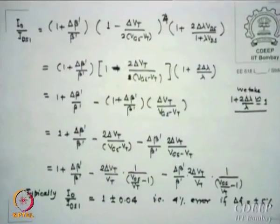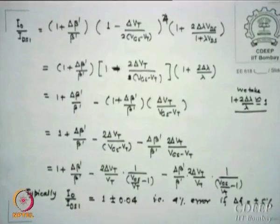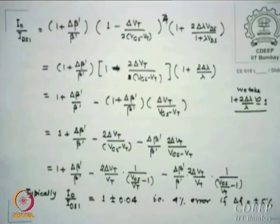4% error is normally acceptable in most cases, but if you require lower than that, you must try to minimize it. If any parameter — Vt, alpha, beta, lambda — has a 5% variation, then typically a 4% error appears in the output current. You can see these terms are getting subtracted, so it will be less than the major error. This is what we covered last time.